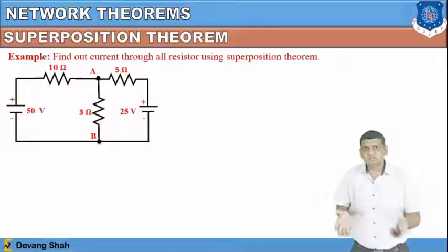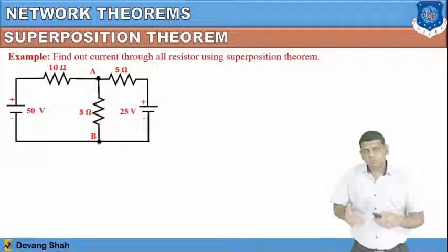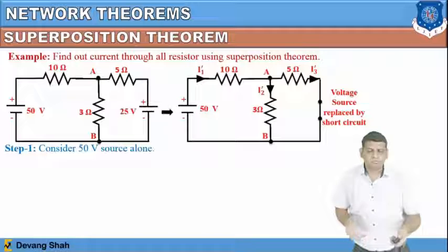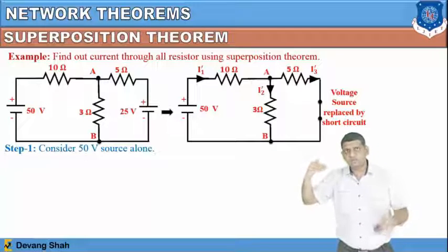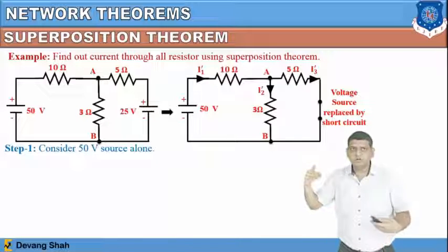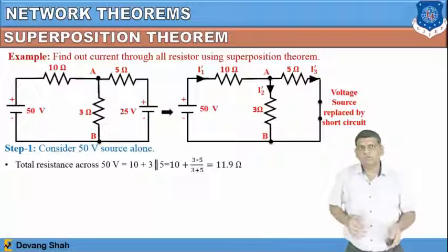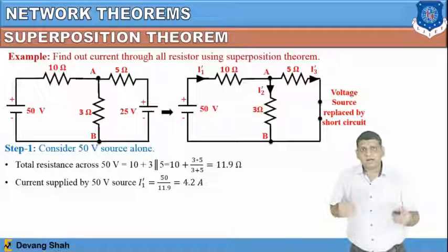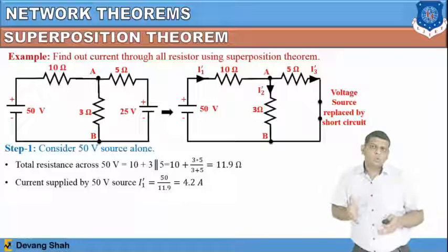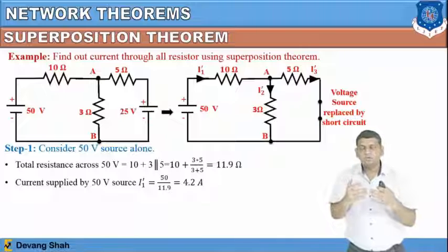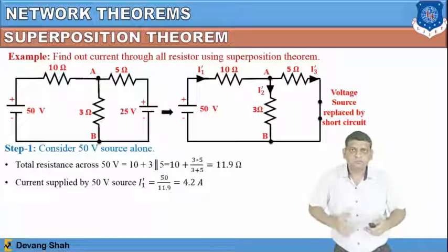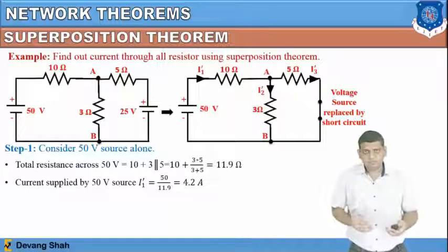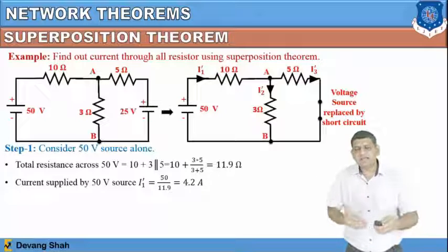Now the second example has two voltage sources. Take one source at a time. Taking the 50 volt source, make the 25 volt source short. Looking from the 50 volt source, the 3 ohm and 5 ohm resistances are in parallel, in series with the 10 ohm. The total resistance of the network is 11.9 ohm. The current supplied by the 50 volt source is i1' = 50 / 11.9 = 4.2 ampere.